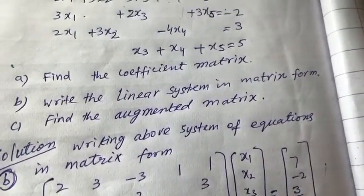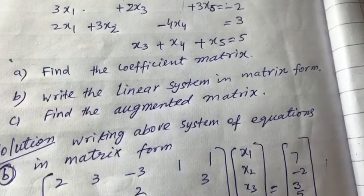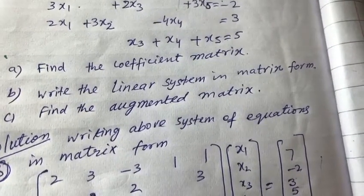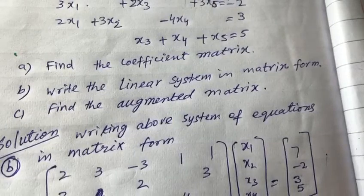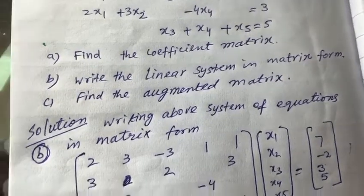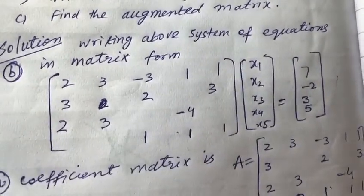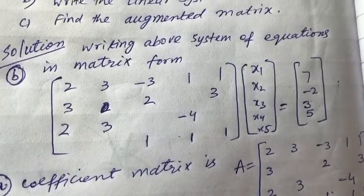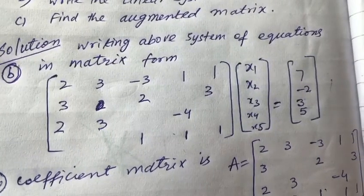We have to find the coefficient matrix, write the linear system in matrix form, and find the augmented matrix. First of all, we will write the system of equations in matrix form.